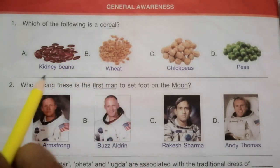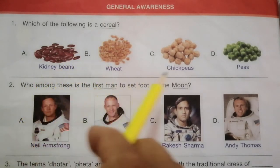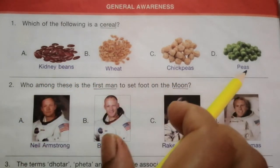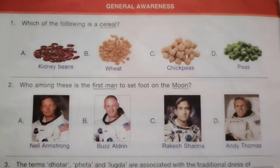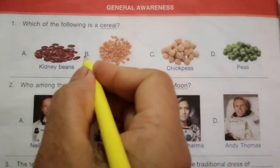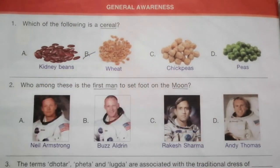Question 1: Which of the following is a cereal? The options are kidney beans, wheat, chickpeas, and peas. The answer is B, wheat. The others are pulses.